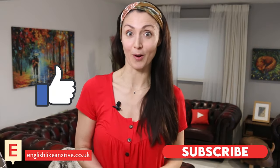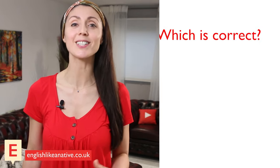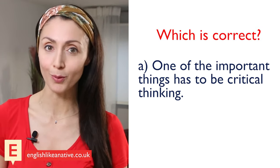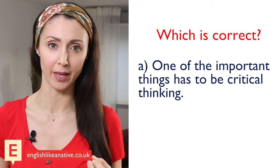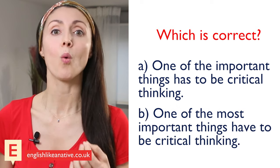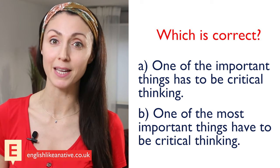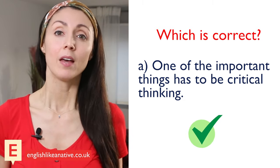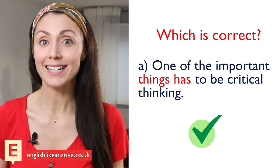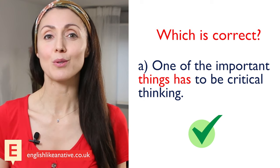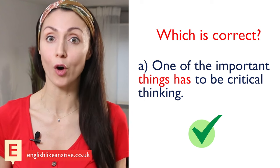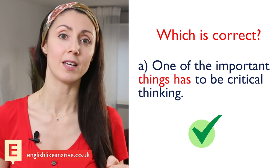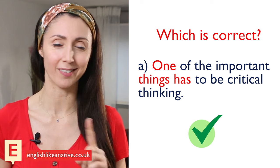Let's look at one more example. But before we do, please take a second to give this video a like and click subscribe. Now, which is correct? 'One of the most important things has to be critical thinking.' The answer is A — 'has.' Even though we have 'things' and 'has' next to each other, we have to use the third person singular form of the verb because the head noun in this phrase is 'one,' not 'things.'